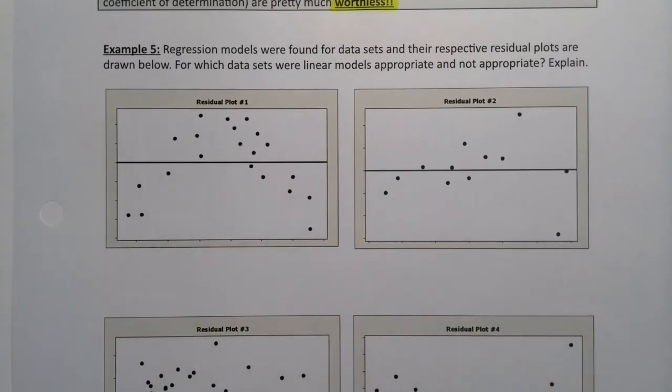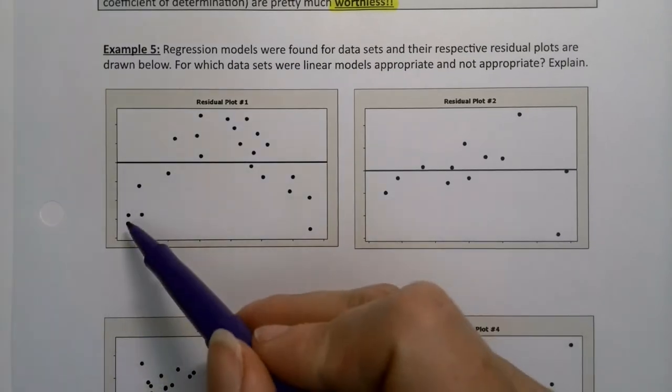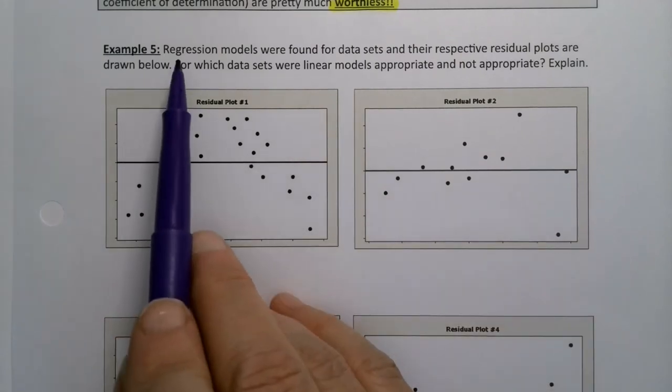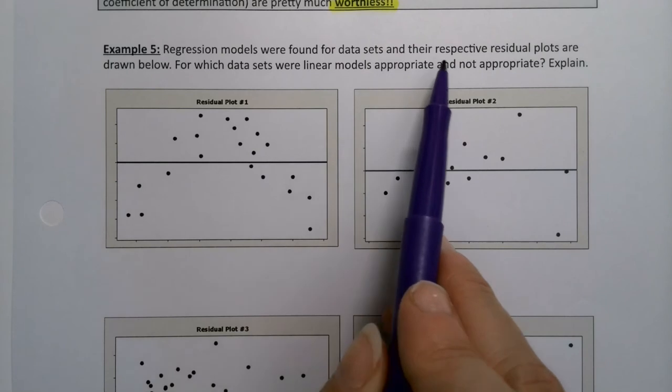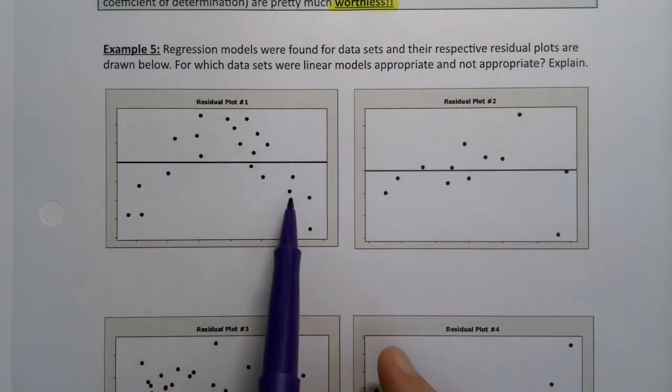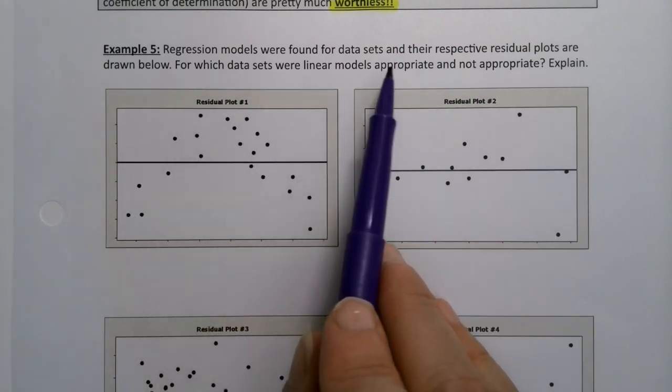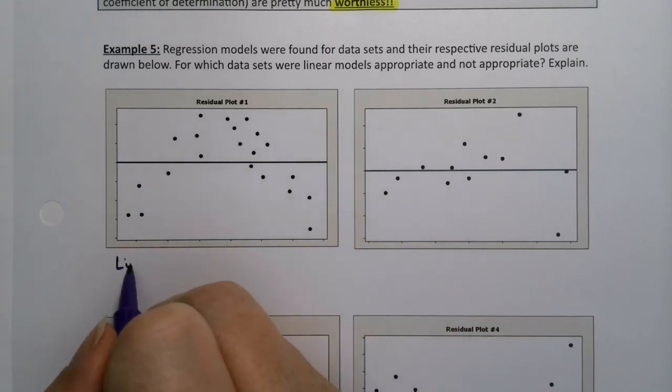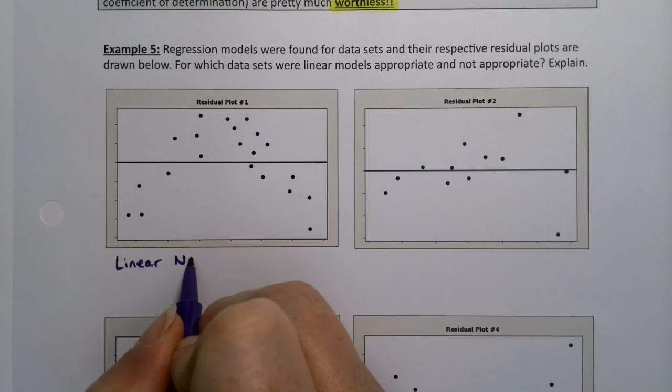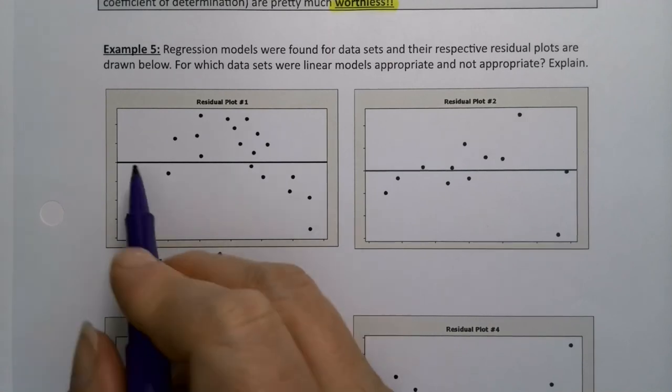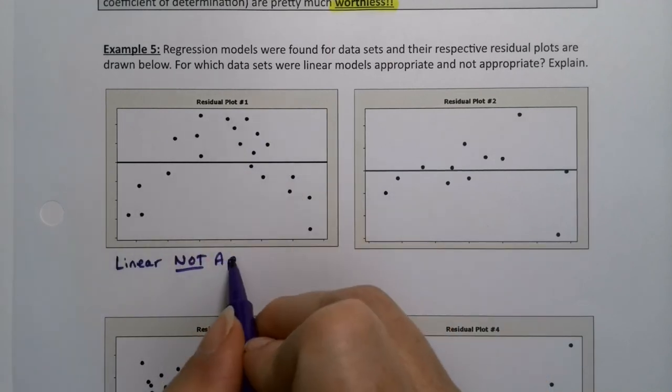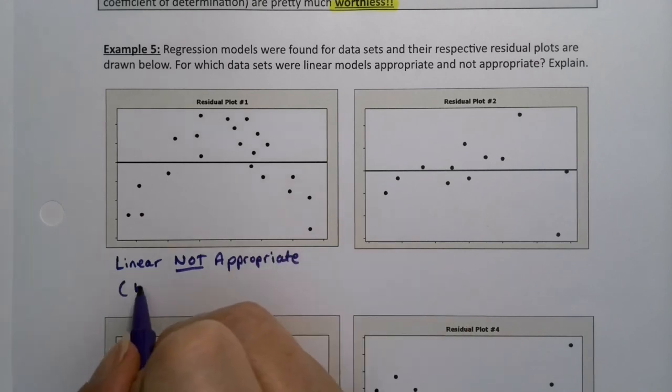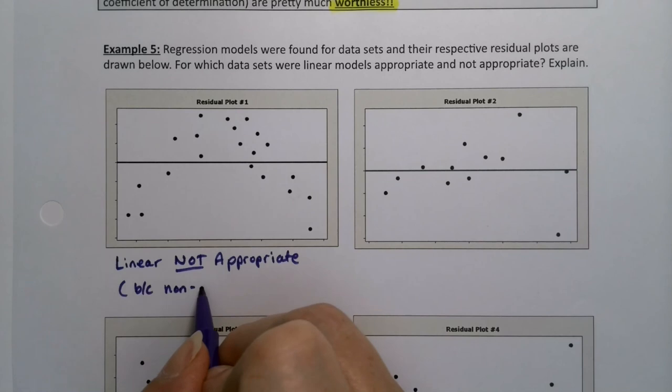So, let's look at these four examples. I already mentioned the first one. You can see it has a non-random pattern. So, it's asking us. Regression models were found for these data sets. And their respective residual plots are drawn below. For which data sets were linear models appropriate and not appropriate? So, this is linear model not appropriate. It very obviously has a quadratic pattern. There's a non-random pattern.